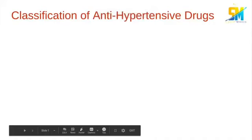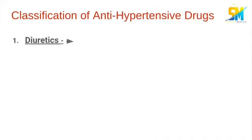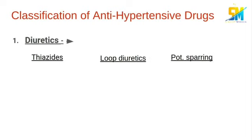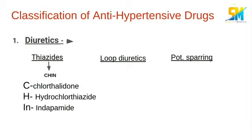The first category of antihypertensive drugs is diuretics, which include thiazides, loop diuretics, and potassium-sparing drugs. We can remember the thiazides with the mnemonic 'GENE': chlorothalidone, hydrochlorothiazide, and indapamide.